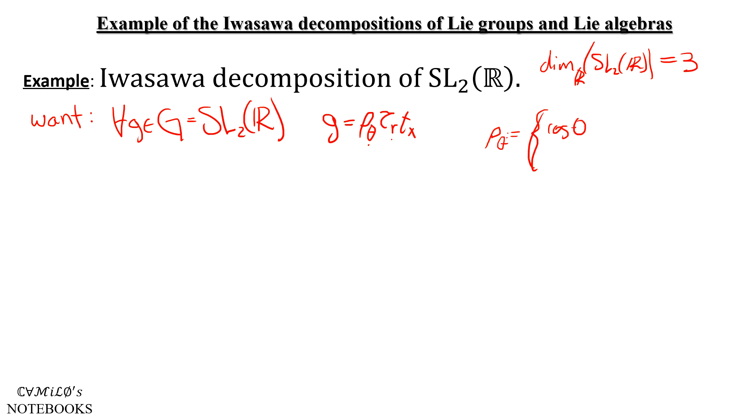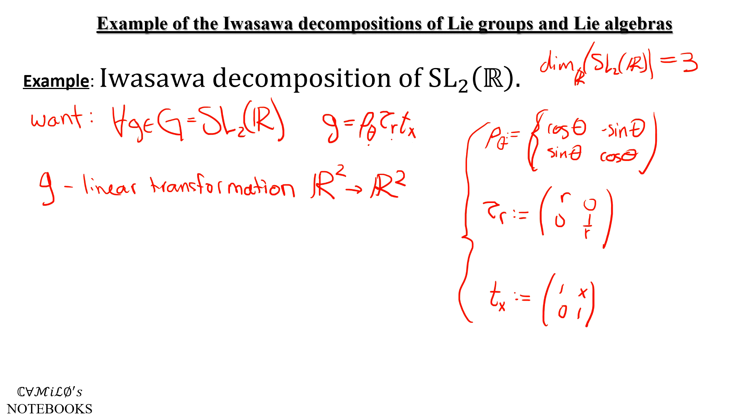the τ_R are matrices of this form, and the T_X are matrices of this form. Now remember that G is a 2 by 2 matrix, so it can be seen as a linear transformation from the plane to itself. And to see what G does, we'll just see what it does to the basis vectors E₁ and E₂ as we mentioned before.